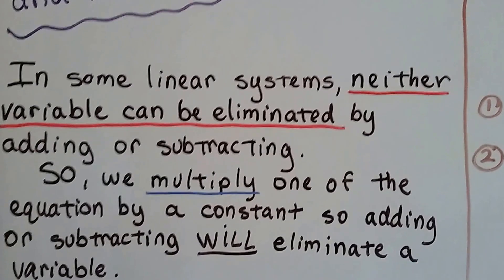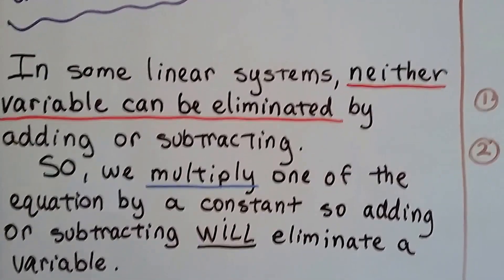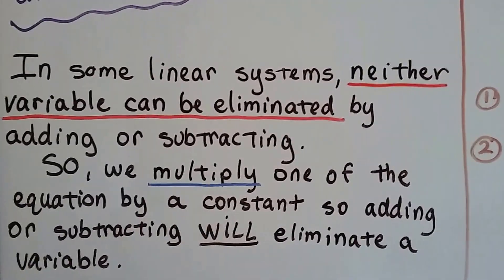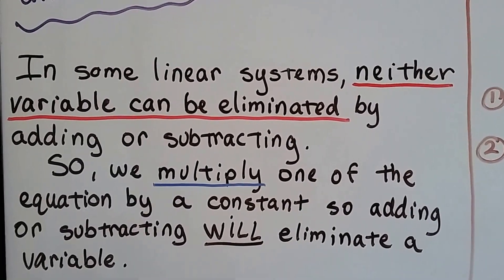So what we do is we multiply one of the equations by a constant, so adding or subtracting will eliminate a variable.